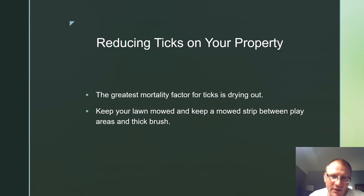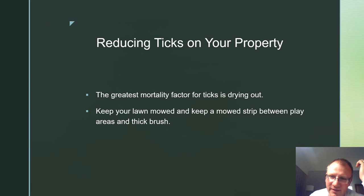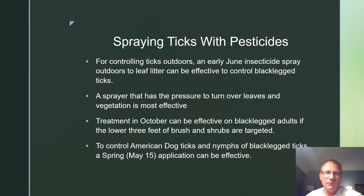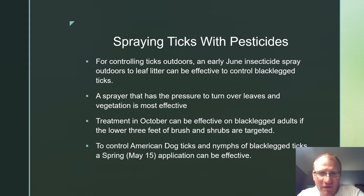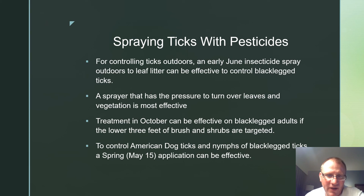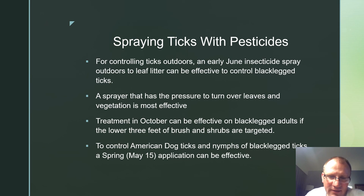When reducing ticks on your property, the greatest mortality factor for ticks is drying out. Keep your lawn mowed and maintain a mowed strip between play areas and thick brush. For controlling ticks outdoors with pesticides, an early June insecticide spray to leaf litter can be effective for controlling black-legged ticks, using a spray with enough pressure to turn over leaves and vegetation. Treatment in October can be effective on black-legged tick adults if the lower three feet of bushes and shrubs are targeted. A spring May 15th application can control American dog ticks and nymphs of black-legged ticks.